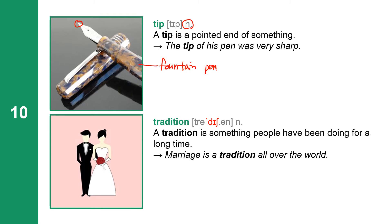Next one: tradition. Tradition has three syllables: T-R-A-D-I-T-I-O-N. The T-I-O-N sounds like 'shun.' Tradition is a noun. Tradition is something people have been doing for a long time. Marriage is a tradition all over the world.